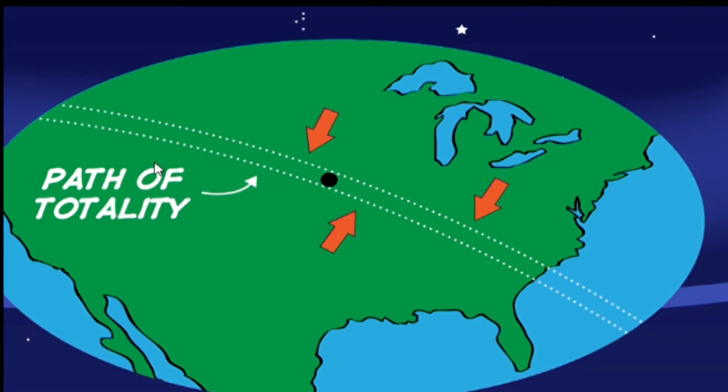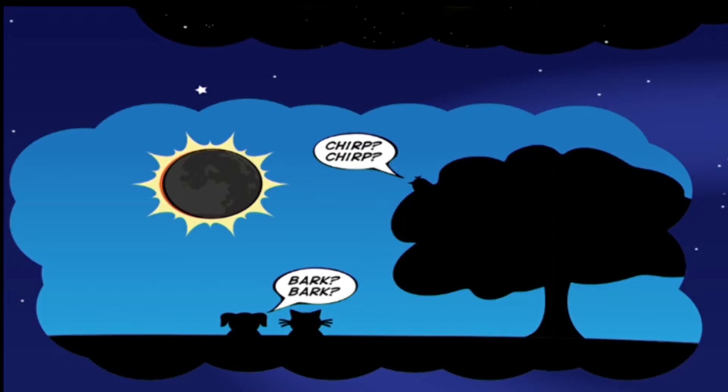In that path, the moon completely blocks the Sun's light for a few minutes. It gets so dark that it looks like nighttime during a full moon. If you don't know what's happening it can be confusing. Animals can get confused too.